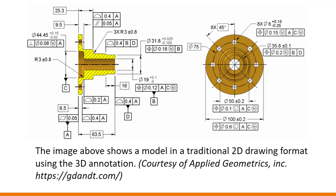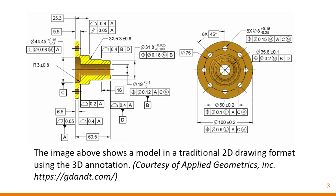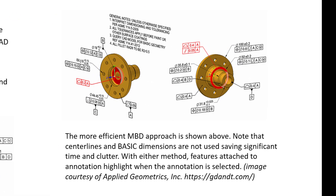Below here we have a typical 2D drawing. This image shows a model of a traditional 2D drawing format using 3D annotation. On the right, we have the more efficient MBD approach. Note that centre lines and basic dimensions are not used, saving significant time and clutter. With either method, features attached to an annotation highlight when the annotation is selected.